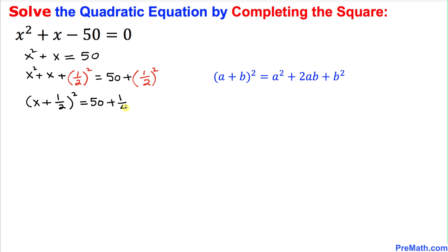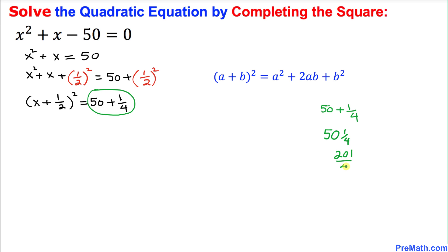Now let's go ahead and add the numbers on the right hand side. We can see the first number is a whole number and the second is a fraction. Whenever we have this kind of combination we can simply merge them as a mixed number: 50 and 1/4. This mixed number can be written as (4 times 50) plus 1, which gives 201 over 4. So the right hand side is 201 divided by 4.